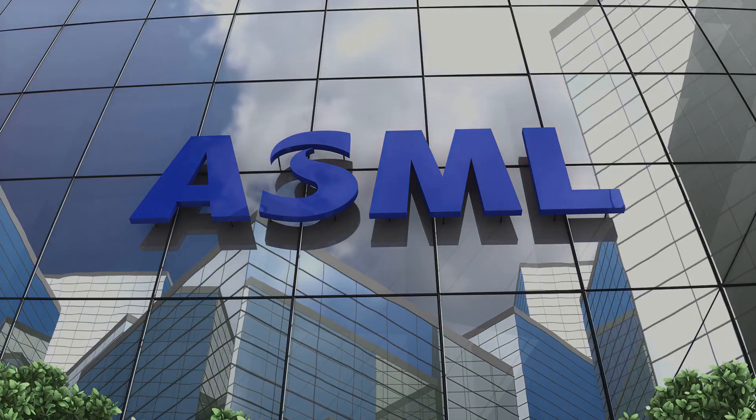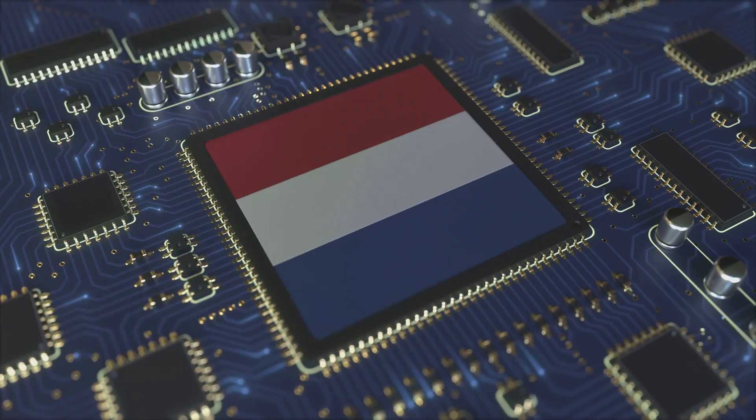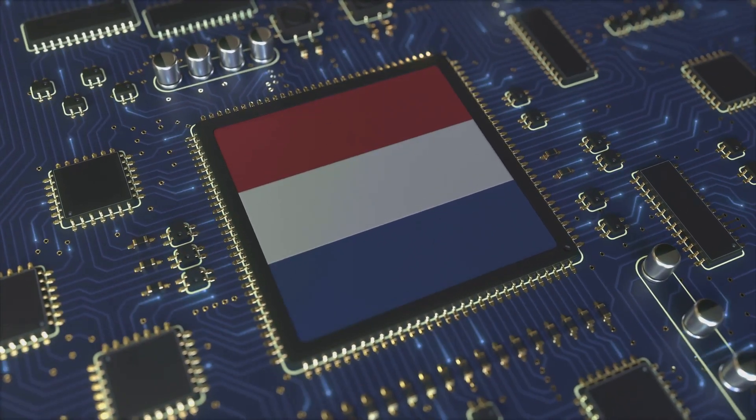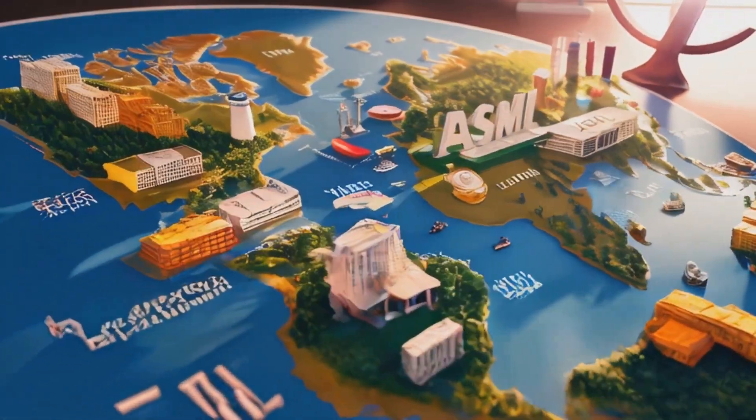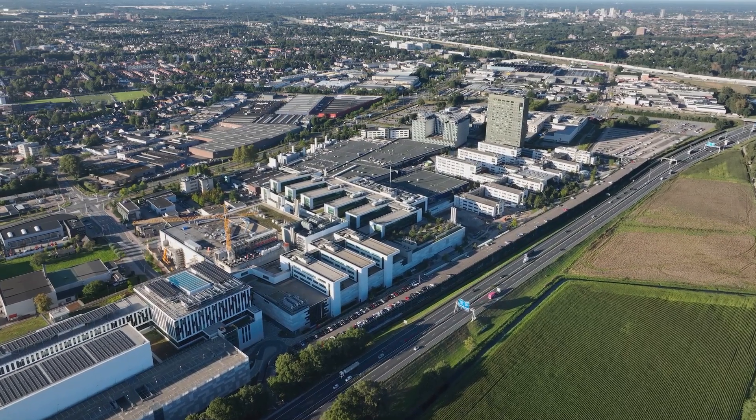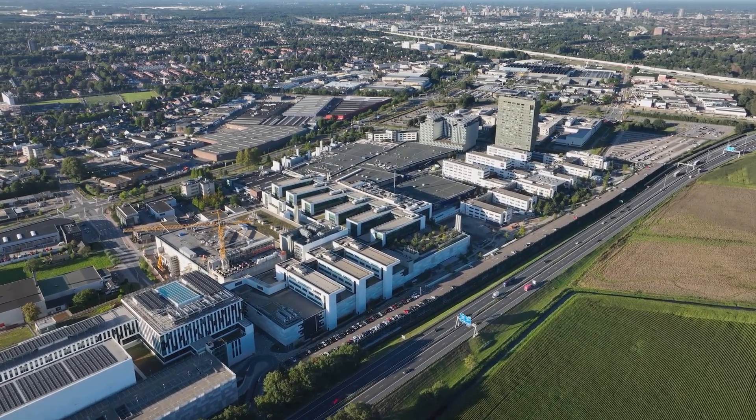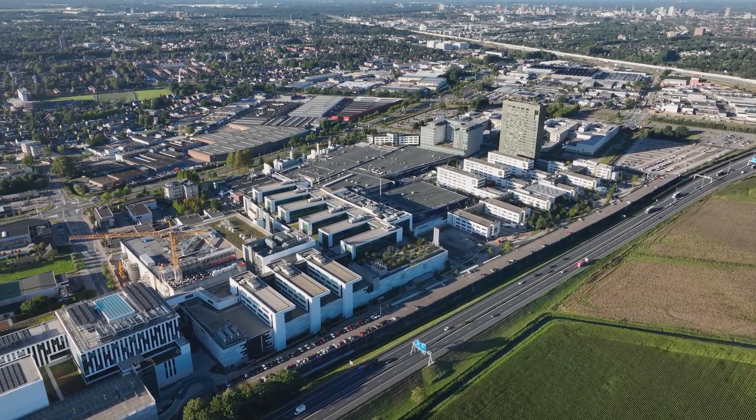The answer lies with a company you may not have heard of, a company called ASML. This Dutch company is a pioneer in the world of semiconductor lithography, a field that is crucial to the creation of these tiny yet powerful chips. ASML is headquartered in Veldhoven, a small town in the Netherlands. From this location, they have revolutionized the way we create semiconductors, pushing the boundaries of what's possible and setting new standards for the industry.